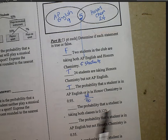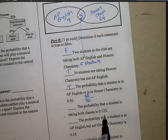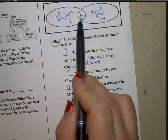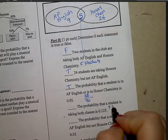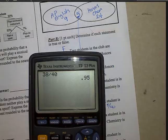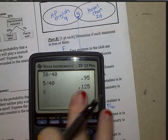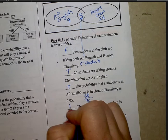The probability that a student is taking both classes, well, both classes would be a 5. Take 5 and divide it by 40. 0.125, true statement.